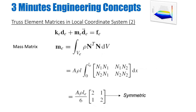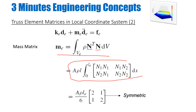I do the same for my mass matrix. The mass matrix relationship was given by the integral of rho times N^T times N dV. I substitute the values of N^T and N, multiply and simplify them. Once I substitute the values of N1 and N2 and integrate from 0 to Le, I get my mass matrix. The mass matrix is also a symmetric matrix in our case.